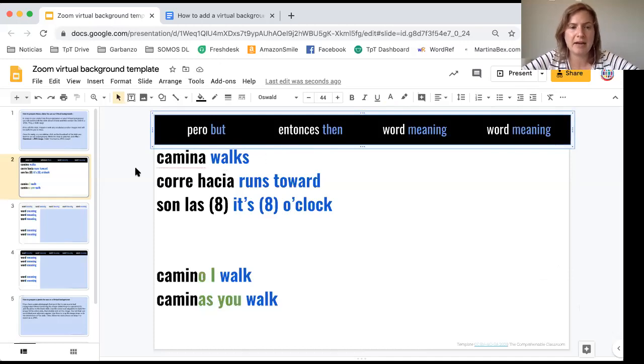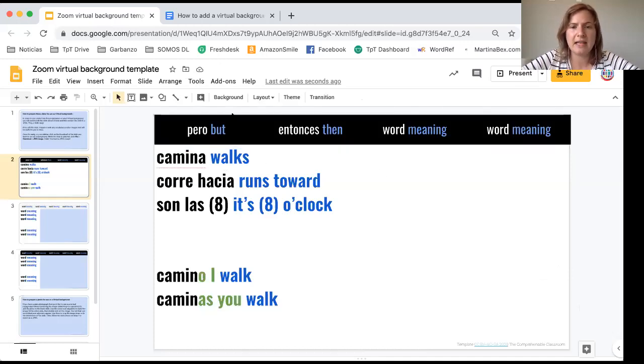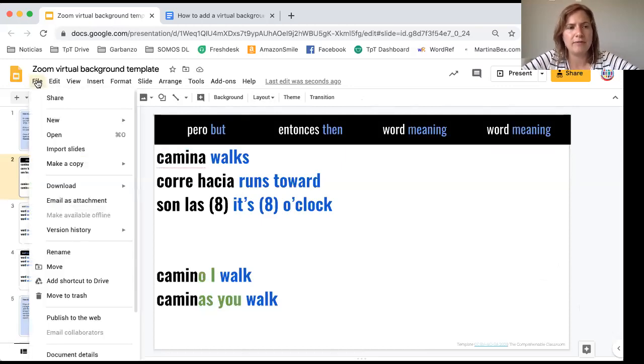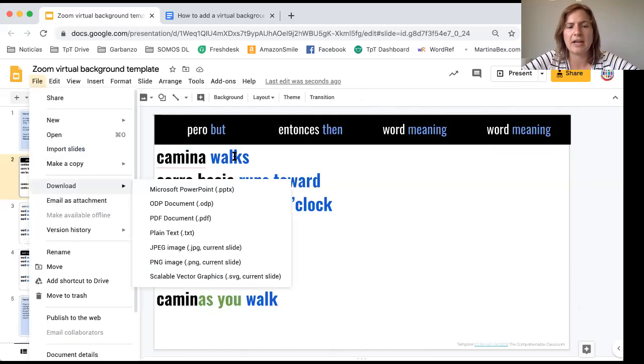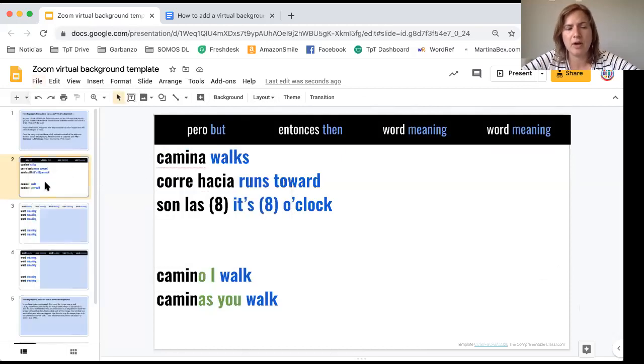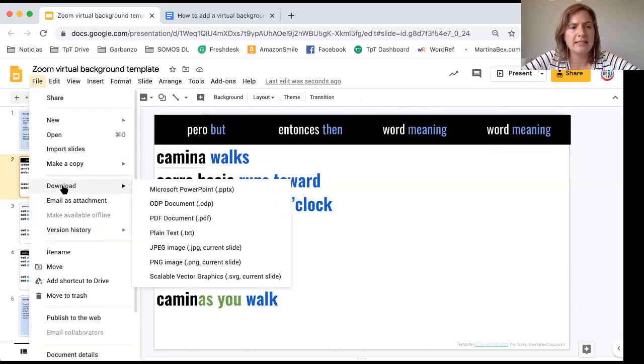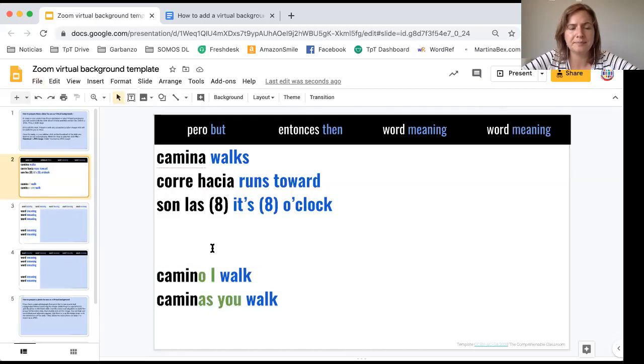So very easy to modify. Once you have the slide all set, you have all the words that you want on it, you're going to go to file. I should say make sure that the slide that you want to use as your background is selected here in the finder window, then file download and then JPEG current slide.